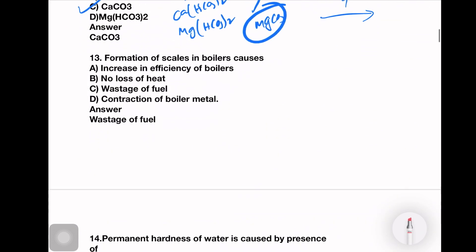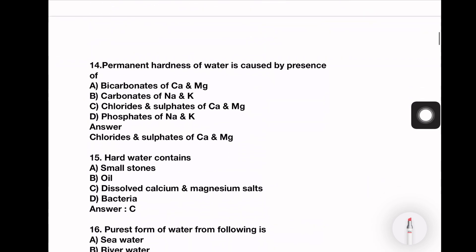Next question. Formation of scale in boilers causes increase in efficiency of boilers, no loss of heat, wastage of fuel, or contraction of boiler material. So wastage of fuel. Option number C is the right answer.